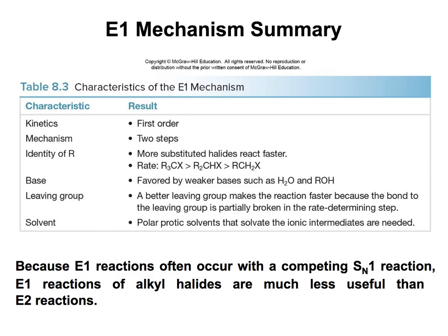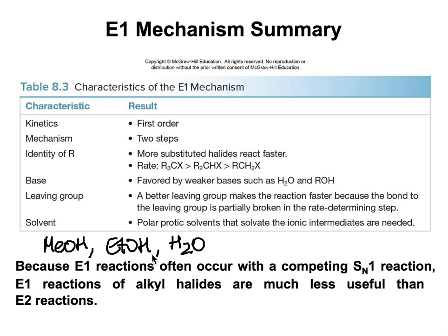Here is a summary of E1 reactions. It is a first-order reaction that happens in two steps. More substituted alkyl halides react faster. A weaker base favors E1, and a stronger base favors E2. A better leaving group makes the reaction happen faster. Polar protic solvents that solvate the intermediates are useful, and these include methanol, ethanol, and water.